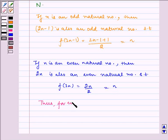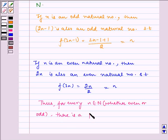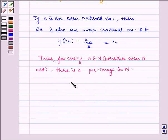Thus, for every n belongs to N, whether even or odd, there is a pre-image in N. Thus, f is onto.